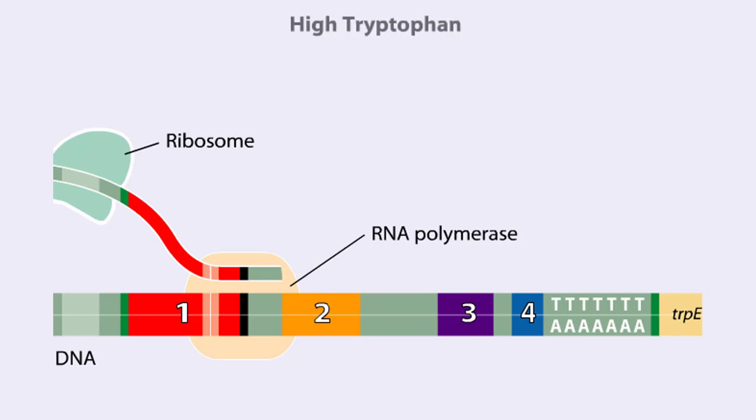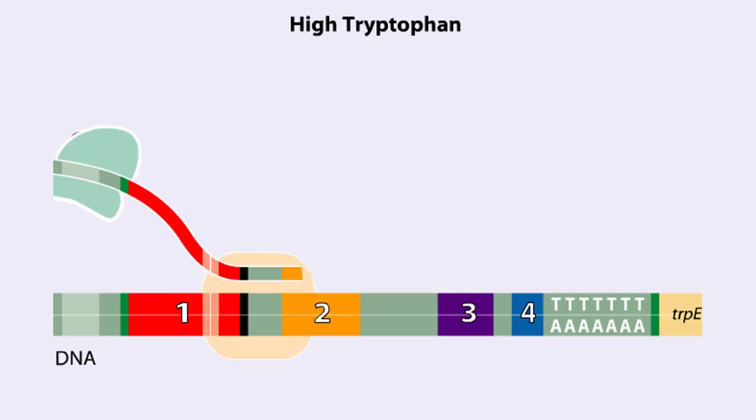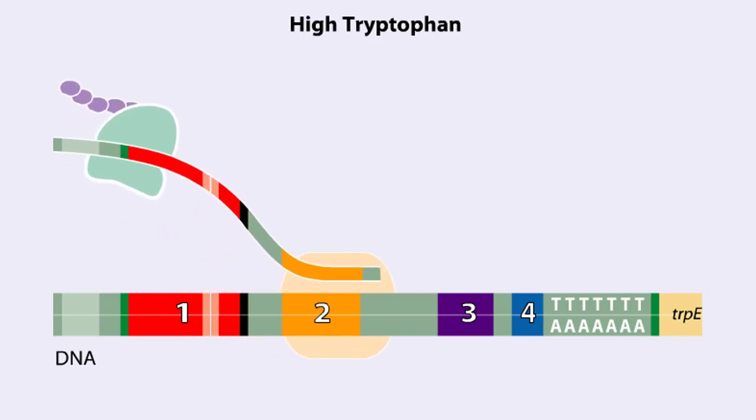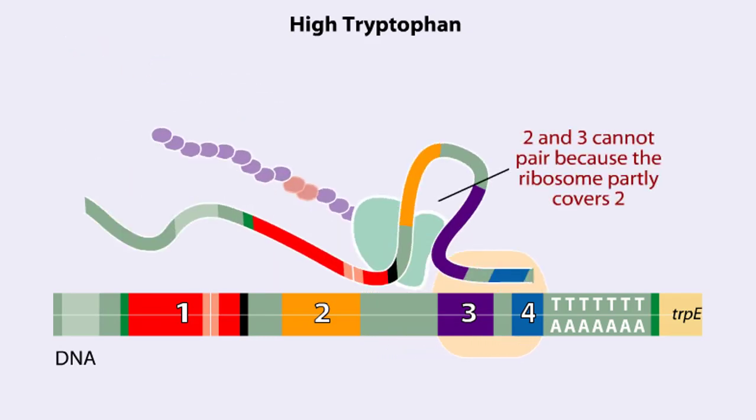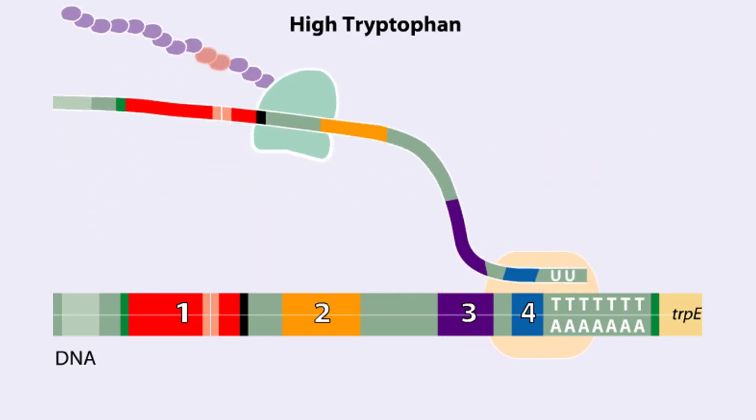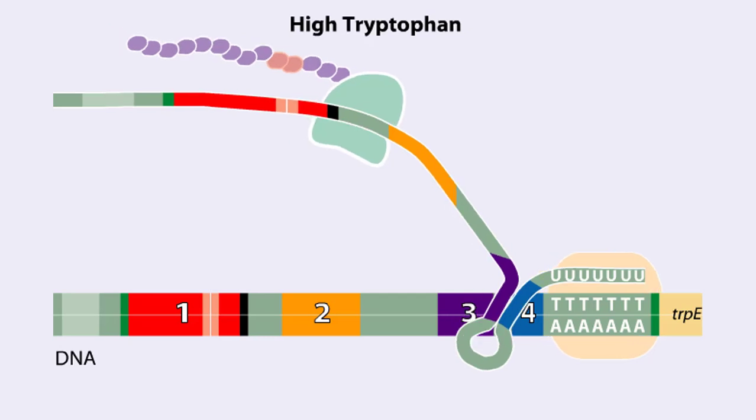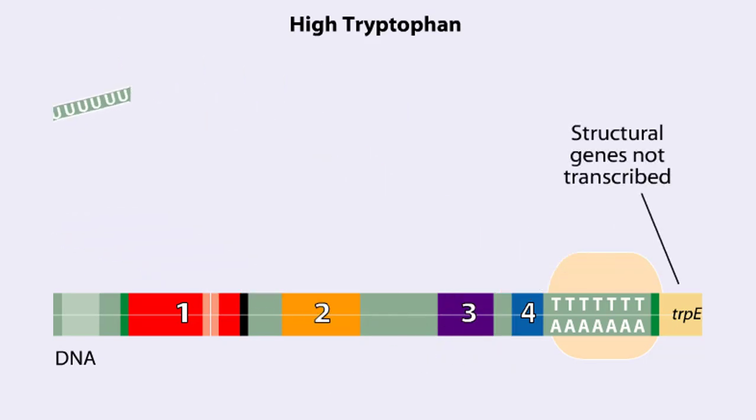When tryptophan is abundant, the ribosome doesn't slow down at the tryptophan codons. By the time region 3 is transcribed, the ribosome has already moved past the tryptophan codons to partly cover region 2. Because region 3 is prevented from pairing with region 2, it pairs with region 4 instead to produce the attenuator, which terminates transcription. The structural genes are not transcribed, and therefore, no additional tryptophan is synthesized.